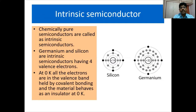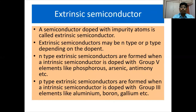Germanium and silicon are intrinsic semiconductors having 4 valence electrons. At 0 Kelvin, all the electrons are in the valence band held by covalent bonding, and the material behaves as an insulator at 0 Kelvin. So, semiconductors at 0 Kelvin basically behave like insulators.